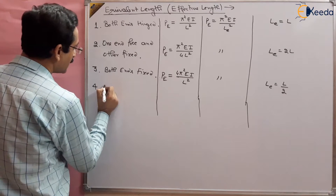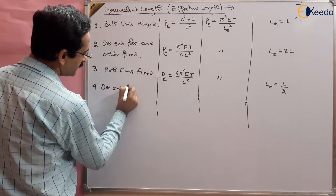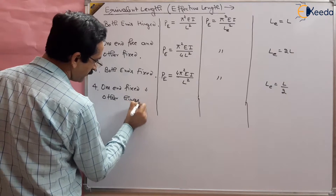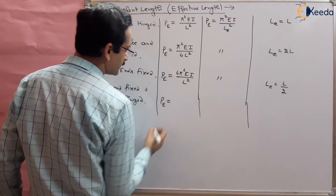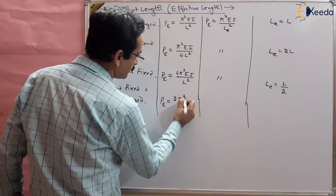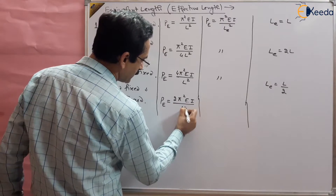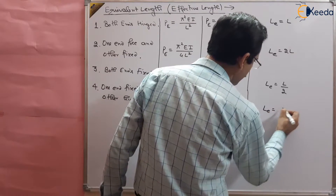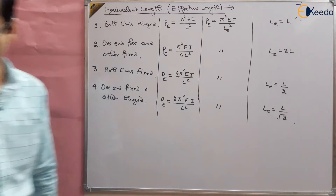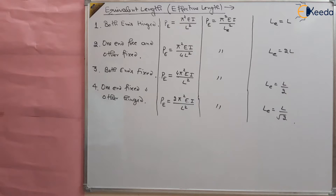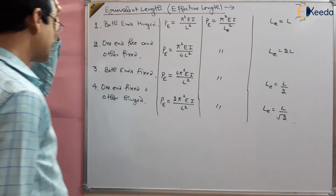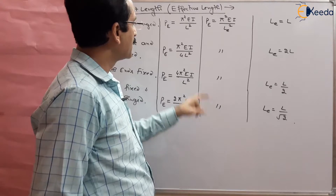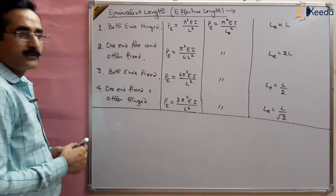Case 4: one end fixed and the other end hinged. The Euler's formula gives 2π²EI/L². Comparing with π²EI/Le², we get Le = L/√2. So these are the four cases in which we can use a uniform equivalent-length formula to characterize each end condition.